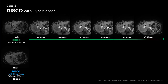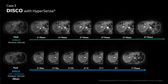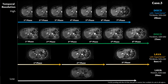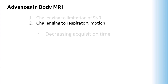Using DISCO with Hypersense shortens the breath hold time by three seconds and adds one more phase. We have multiple options to choose from: if you need just one arterial phase with the highest SNR, use conventional LAVA. If you need more than one phase, add Hypersense to get two or three arterial phases. If you need super-high temporal resolution, use DISCO with Hypersense, which offers less than three seconds temporal resolution. Breath hold time will be around 20 seconds for each protocol.